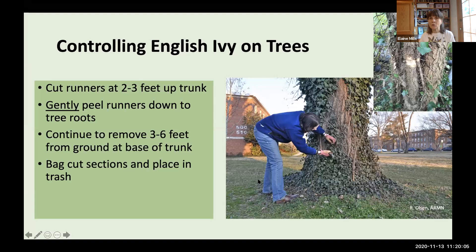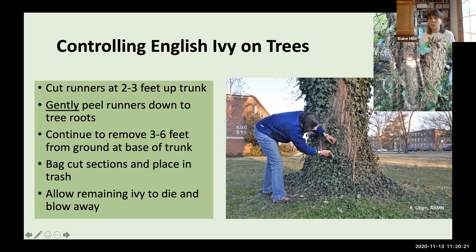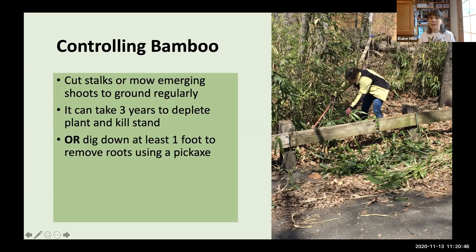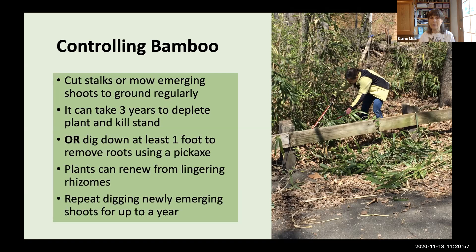Allow the remaining ivy farther up the trunk to die — once the roots are severed, it will die, dry up, and the leaves will eventually blow away. For bamboo, you can cut the stalks or mow any emerging shoots down to the ground regularly. This is a slow process — it can take up to three years to deplete the plant's energy and kill the stand. Another approach is to dig down at least a foot to remove the roots using a pickaxe. The plants can renew if rhizomes remain, so repeat digging for any newly emerging shoots over up to a year.